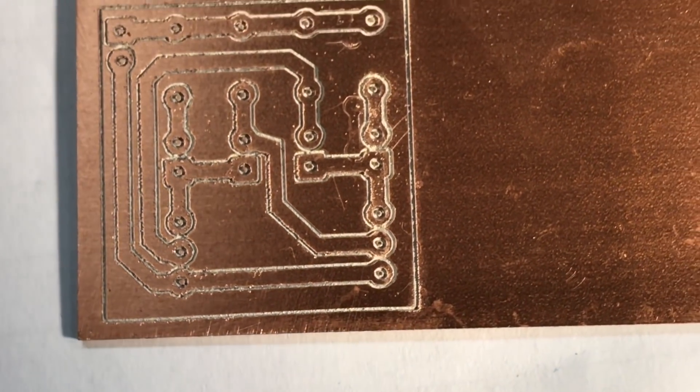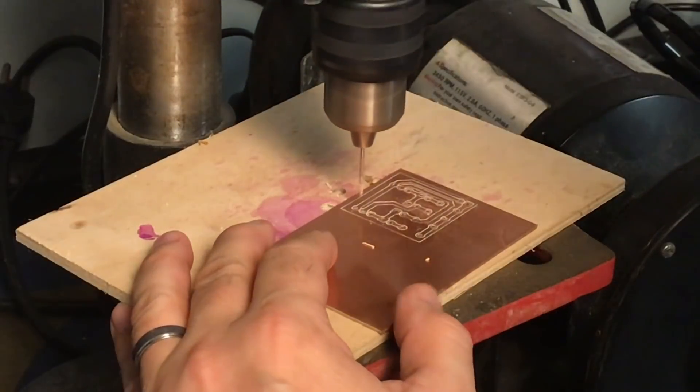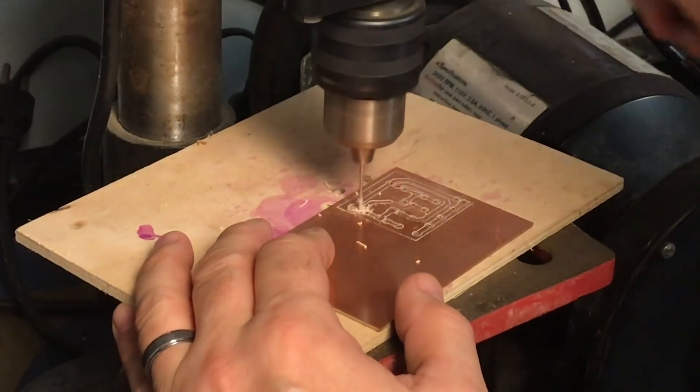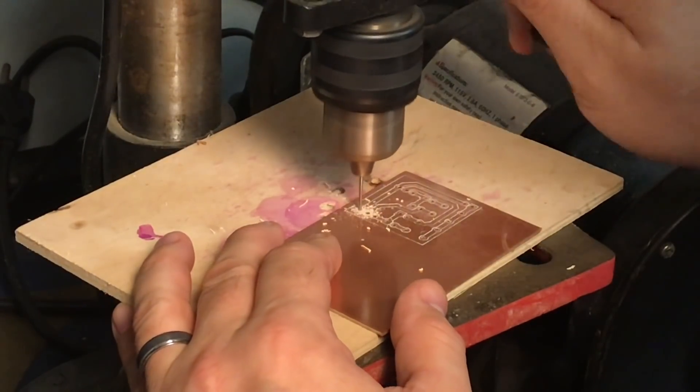So now I just needed to drill the holes. Now I could have done that with the mill but it's just as easy to do it on my drill press. And because I gouged out those holes the bit just fell right into place.